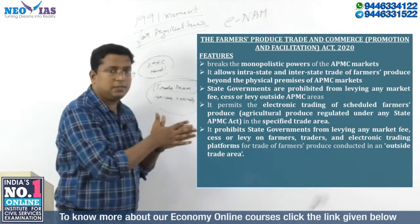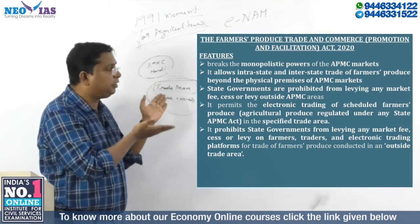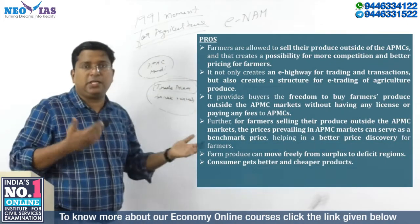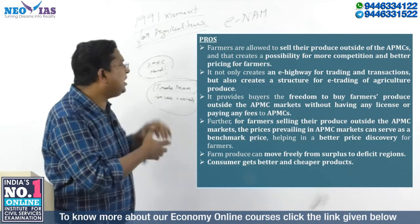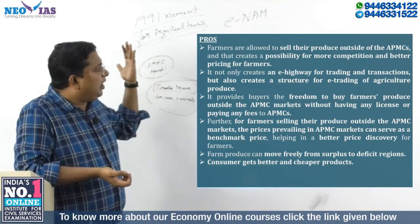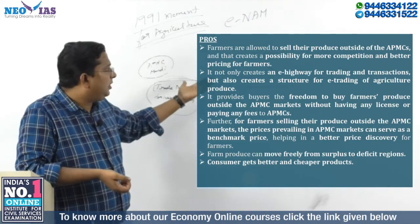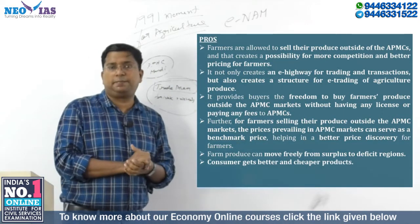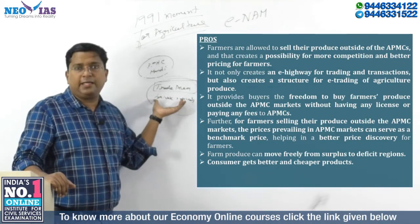These are the features of this law. In mains questions they ask for pros and cons. For advantages: farmers are now allowed to sell their produce outside the APMC market, which creates competition — competition results in better pricing, a better price for farmers' produce. So better price for agricultural produce is one advantage due to competition created by new private markets in the trade area.